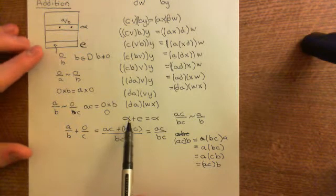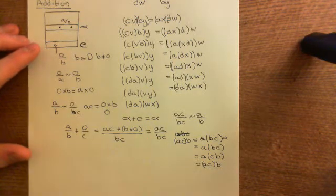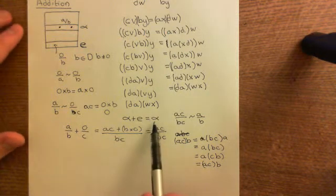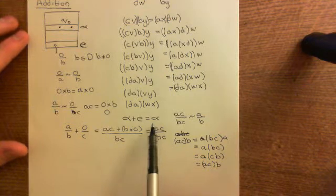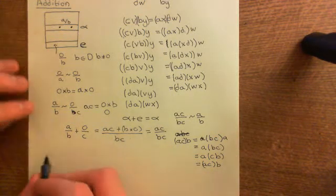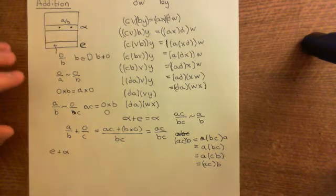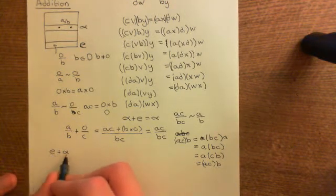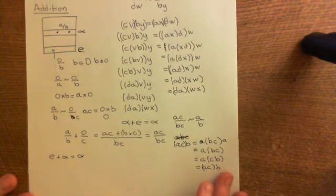So far we've proven that if you take any equivalence class and add it to the equivalence class which contains all fractions with zero in the numerator, that gives back the original equivalence class. We also need to show it the other way round. Since we haven't shown commutativity yet, we also need to show that the identity equivalence class plus any other equivalence class gives back that equivalence class.